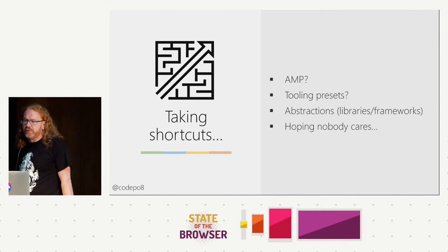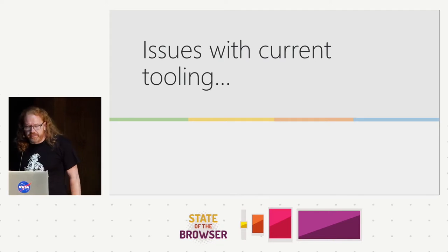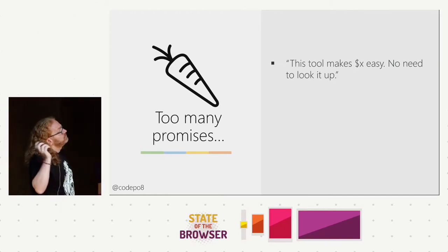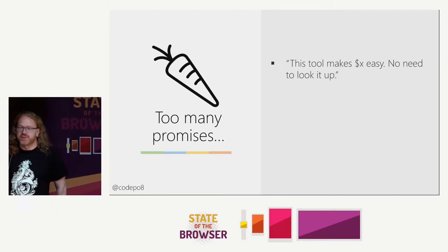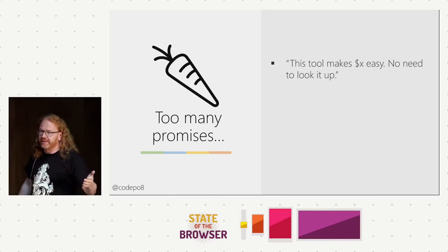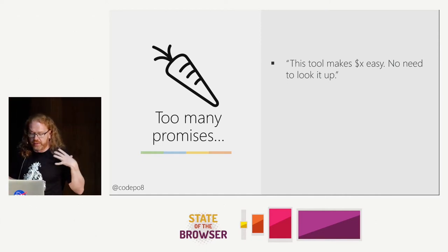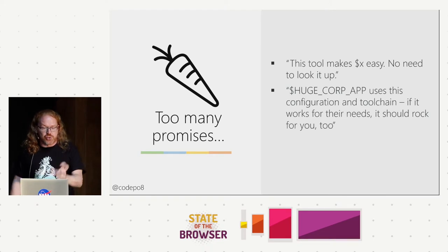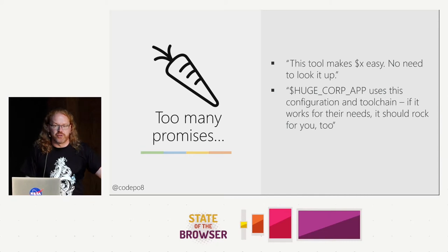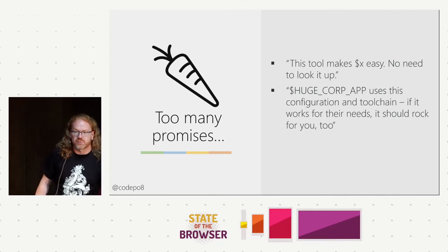There are issues with current tooling. First, there are too many promises: 'this tool makes X easy, no need to look it up' — like 'accessibility is easy if you use this library.' No. But it's a message that people who just spend money on engineering love. 'Huge Corp uses this configuration and tool chain, if it works for their needs it should rock for you too.' Facebook uses React, so probably that florist website should use React as well.